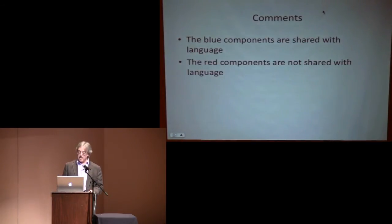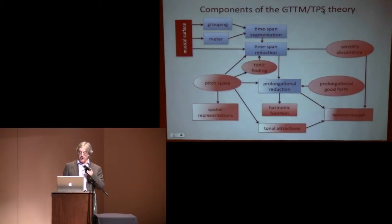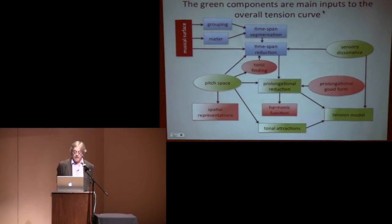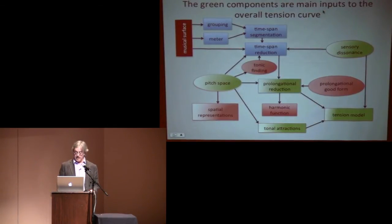The blue components in the theory are shared with language; the red ones are not. Prolongational reduction should perhaps be purple, as it's on the border — the rhythmic aspects toward the top left are shared with language. The green components are the main inputs into the overall tension curve.